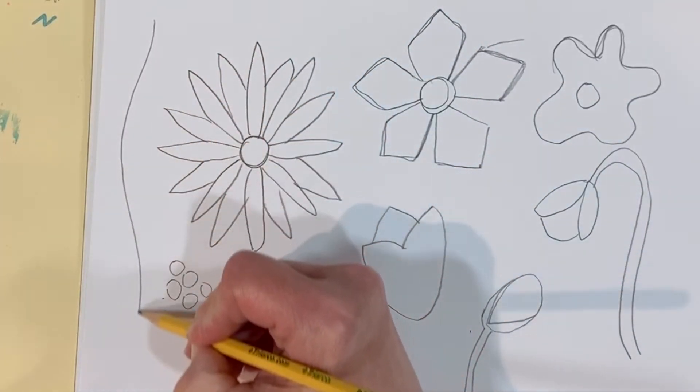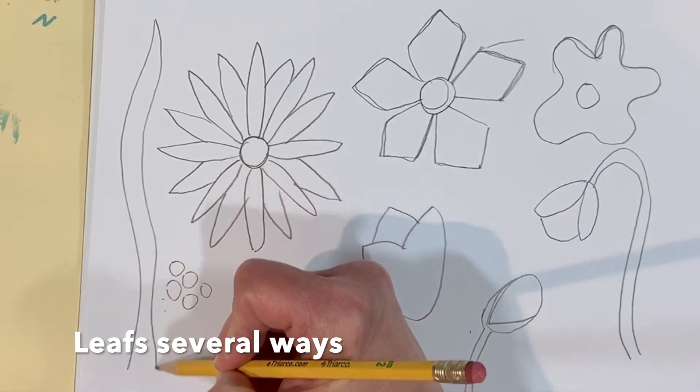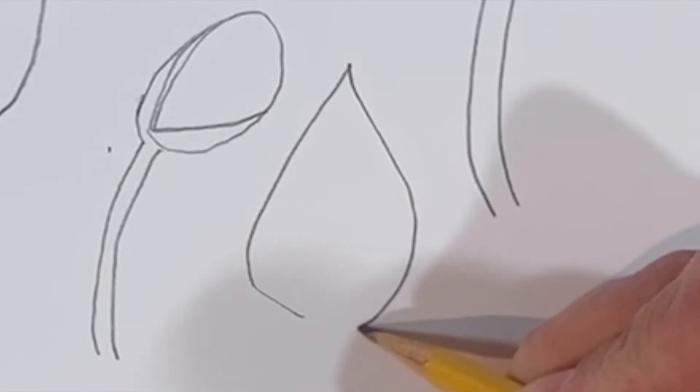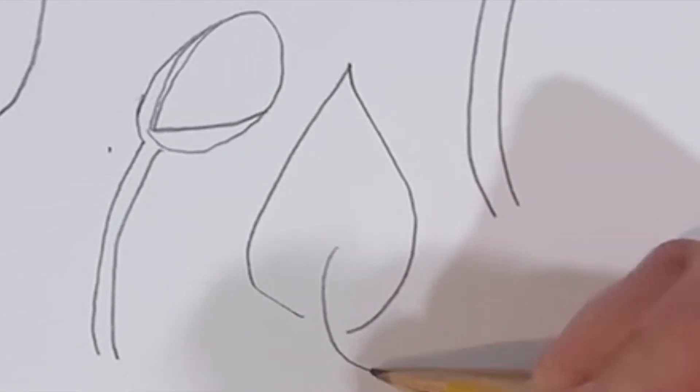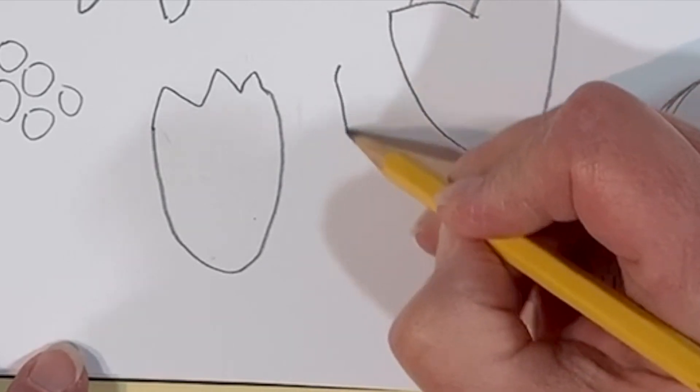You can make leaves several ways. This is a tall skinny leaf sort of like a daffodil leaf. Or you could make sort of a teardrop shape leaf like that. Another sort of plant you could do for filler is just a line with some little circles on it.